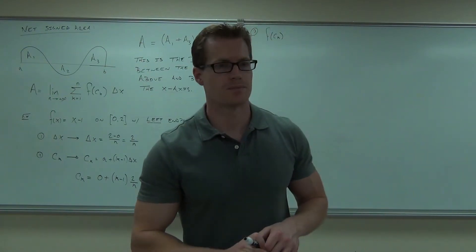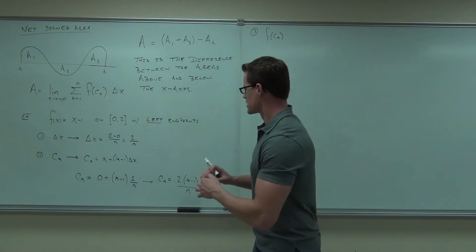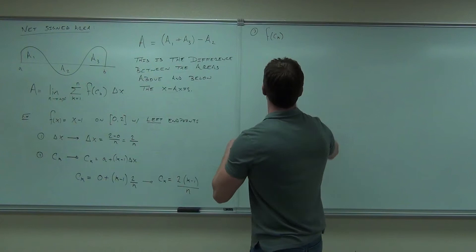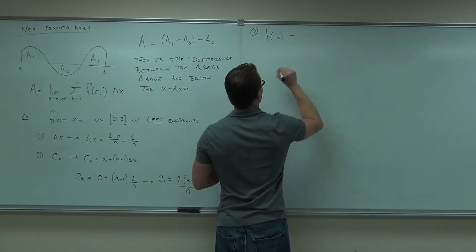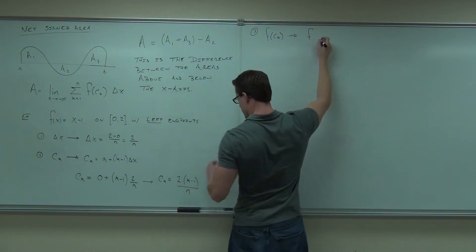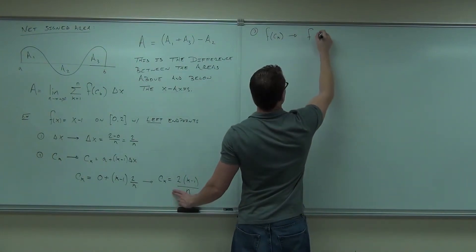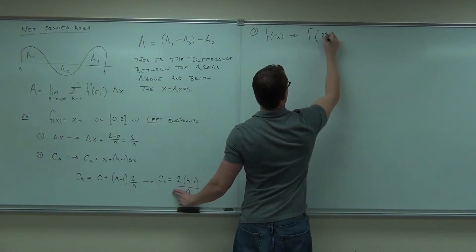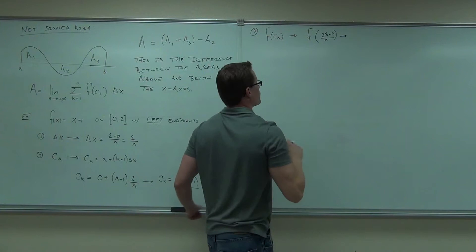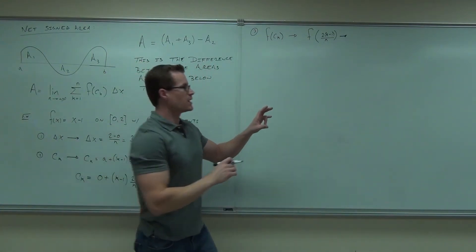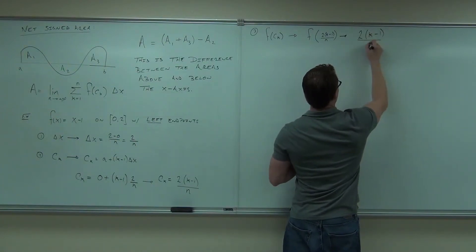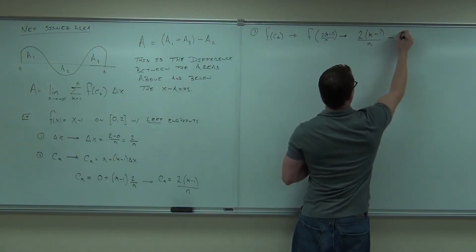What is the function, ladies and gentlemen? No, the function. x minus 1. So I'm supposed to take c sub k and plug it into that. You with me? That says f of 2(k minus 1) over n, which means that I'm going to have, well, if our function is x minus 1, it says 2(k minus 1) over n minus 1.